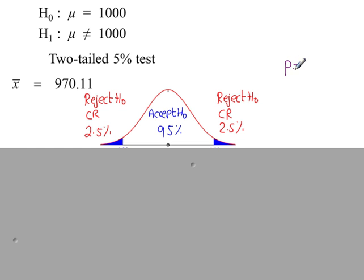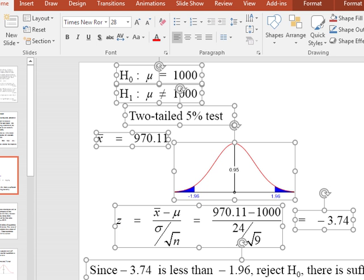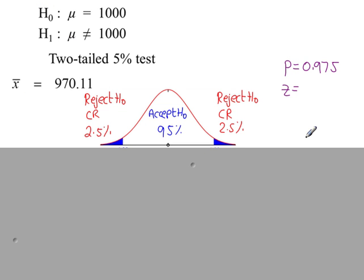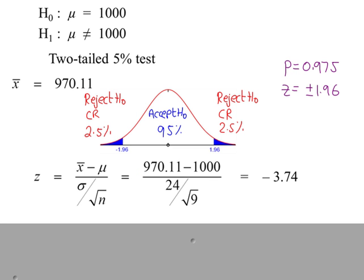The cumulative probability to the left of this line is 97.5%. So we look at P = 0.975 from the tables to get a Z value. At 0.975, the Z value is 1.96, so our critical values are plus or minus 1.96: minus 1.96 and plus 1.96.